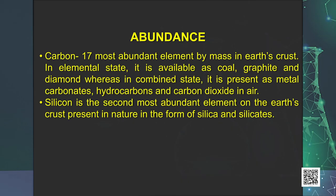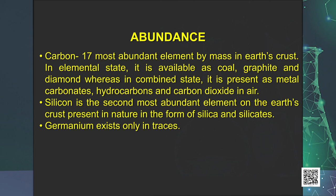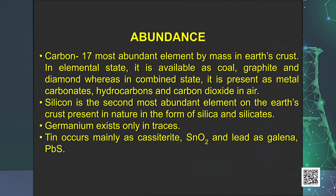The combination of carbon with other elements provides an astonishing array of materials ranging from living tissues to drugs to plastics. Our entire organic chemistry is devoted to carbon-containing compounds as it is an essential constituent of all living organisms. Silicon is the second most abundant element in the earth's crust, present in nature in the form of silica and silicates. It is a very important component of ceramics, glass and cement. Germanium exists only in traces; tin occurs mainly as cassiterite (SnO₂) and lead as galena (PbS).